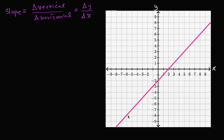Notice, as I have a change in x — for example here my change in x is positive two — I'm going to have the same change in y. My change in y is going to be plus two. So my change in y divided by change in x is two divided by two, which is one. So for this line, slope is equal to one.